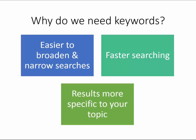When you Google for information, you can put it in a sentence and may find results. Databases in Library Search work much better with a few keywords rather than a whole sentence. Your results will be more specific to your topic, it's easier to broaden or narrow your search, and your whole search process will be faster.